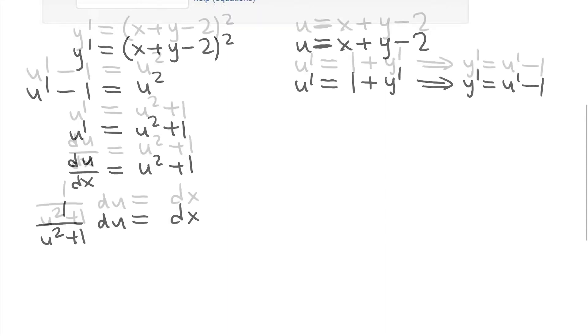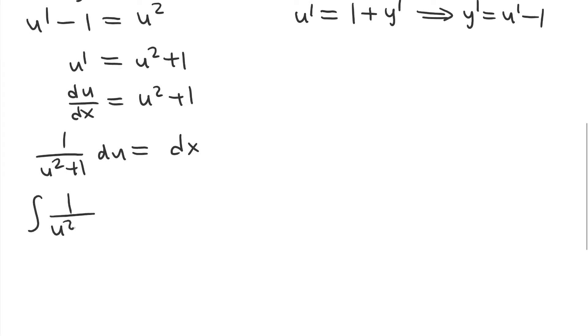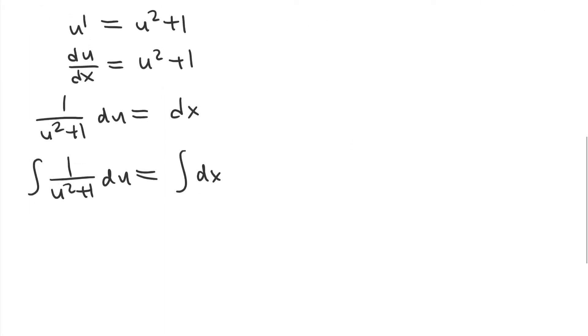Now we can integrate both sides. So the integral of 1/(u² + 1) du equals the integral of dx. On the right-hand side, it's pretty simple. We just get x plus an arbitrary constant.